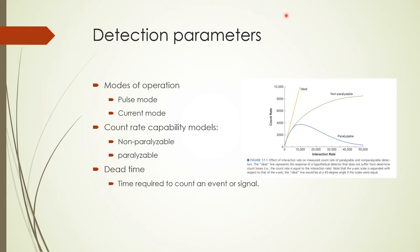For paralyzable systems operated in high radioactivity environments, signals or pulses are ignored during the dead time and any subsequent signal extends the dead time, so the detector eventually stops counting. The measured count rate increases to a peak and then declines, as the curve shows.